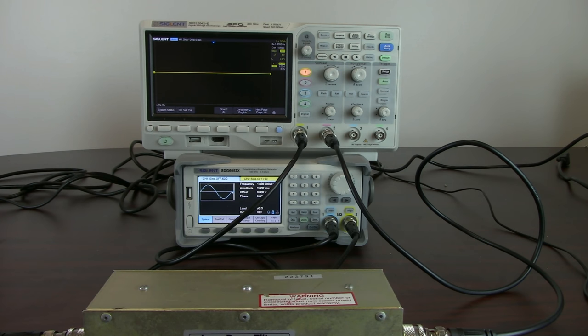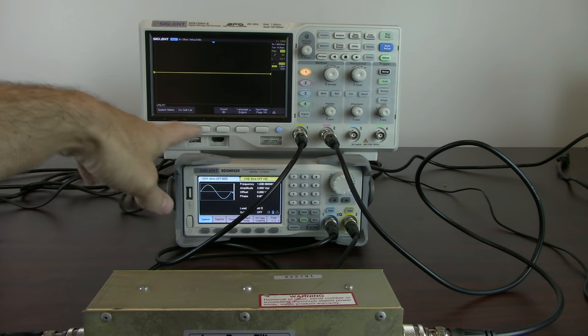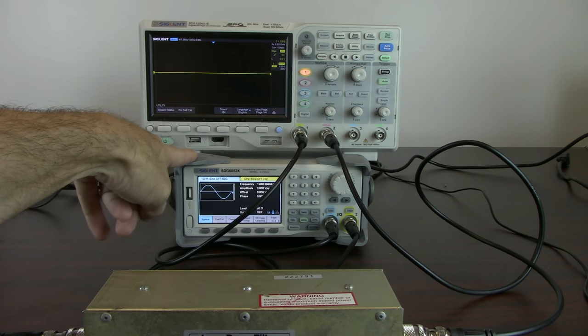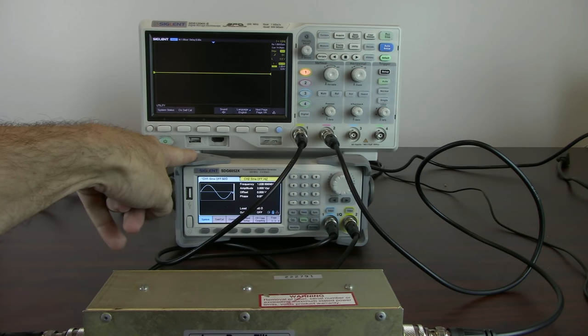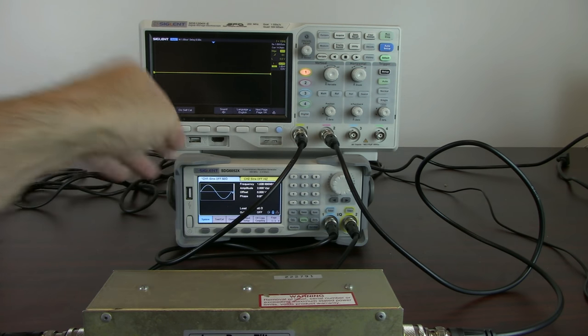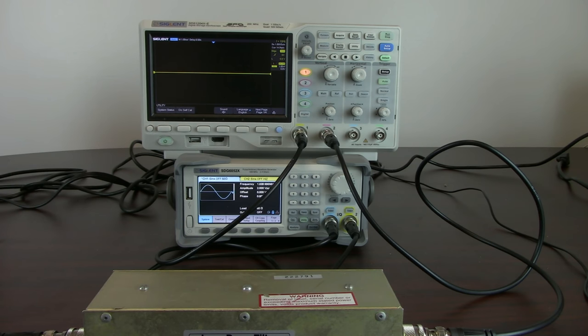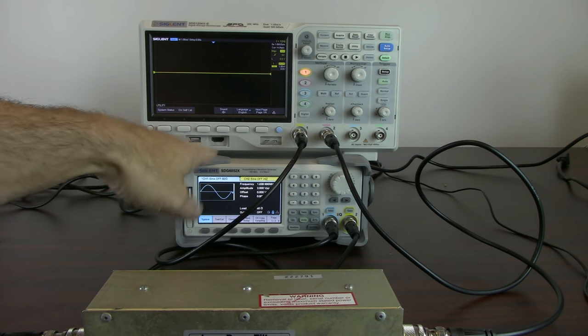We're also going to be using a generator. In this case we're using one of our SDG-6000X series. This particular technique that we're talking about works with an SDG-1X, 2X or 6X family of products. That gets you from 30 megahertz with the SDG-1032X all the way up to 500 megahertz with the SDG-6052X, which is what we have here.